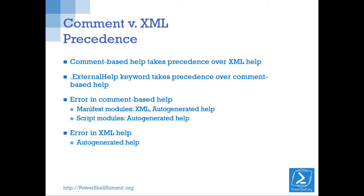The .ExternalHelp keyword takes precedence over everything else in comment-based help. It is required only for functions. If there is an error — even one typo — in any comment-based help keyword, it will ignore all of your comment-based help, and the default is auto-generated help, which is mostly blank. If you have XML help it will fall back to XML help, but for the most part if there's a typo, your fallback is auto-generated help. It looks just like Get-Command.